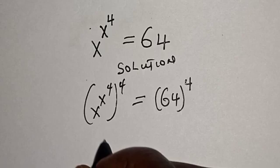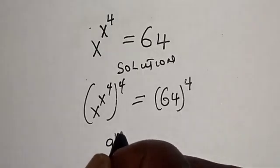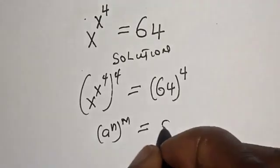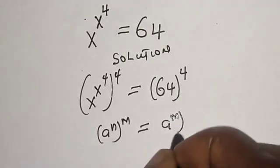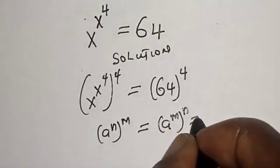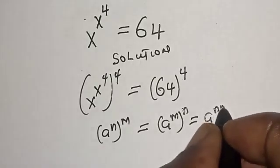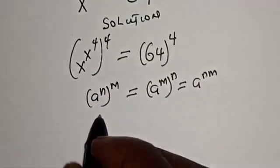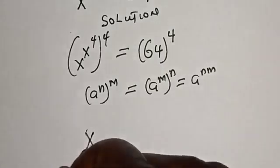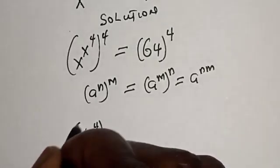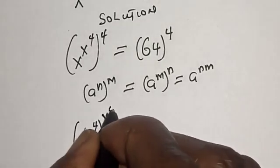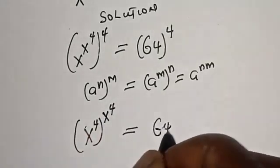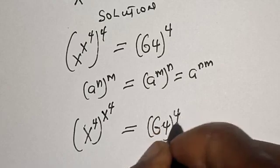Now remember this rule: a raised to power n raised to power m is equal to a raised to power m raised to power n, which is equal to a raised to power n·m. Then this becomes s raised to power 4 raised to power s raised to power 4, is equal to 64 raised to power 4.